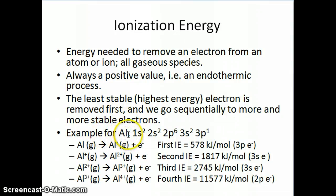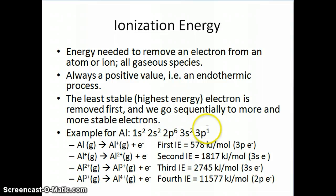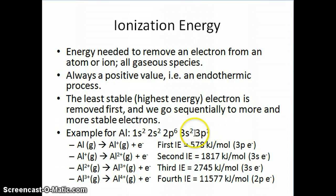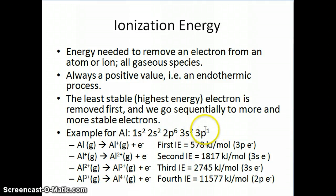Let's take aluminum as an example. Aluminum's electron configuration is 1s², 2s², 2p⁶, 3s², 3p¹. The easiest electron to remove is the 3p electron, because it's furthest from the nucleus as a valence electron, and also because 3p is less stable than 3s. Both factors combine to make the 3p electron the first one removed.